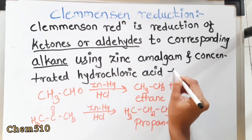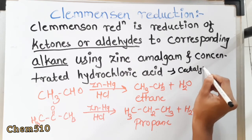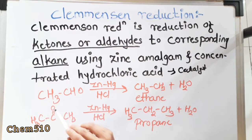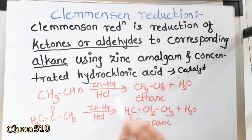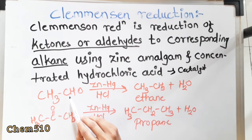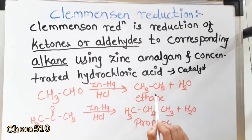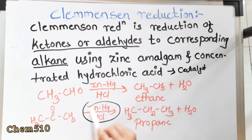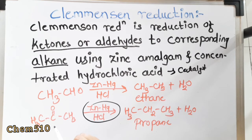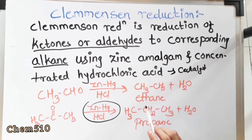For example: acetaldehyde is converted into ethane in the presence of zinc amalgam and HCl, and H₂O is removed — so here the aldehyde is reduced to an alkane. The second example: acetone is converted into propane in the presence of zinc amalgam and HCl — so the ketone is converted into its corresponding alkane, propane. In Clemmensen reduction, ketones or aldehydes are converted into alkanes in the presence of zinc amalgam and concentrated HCl.